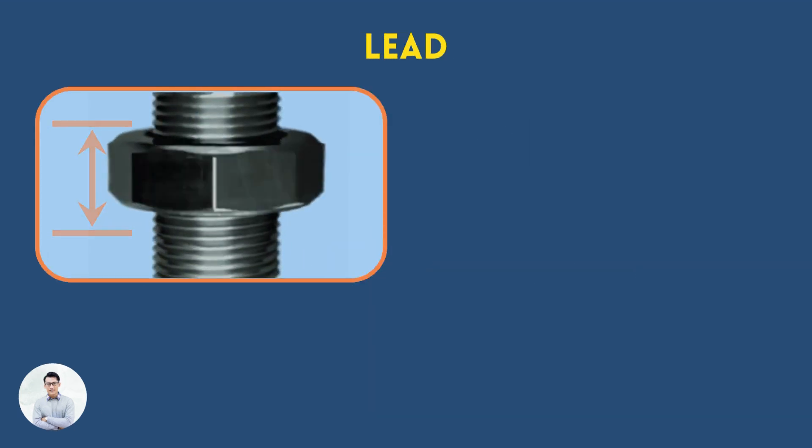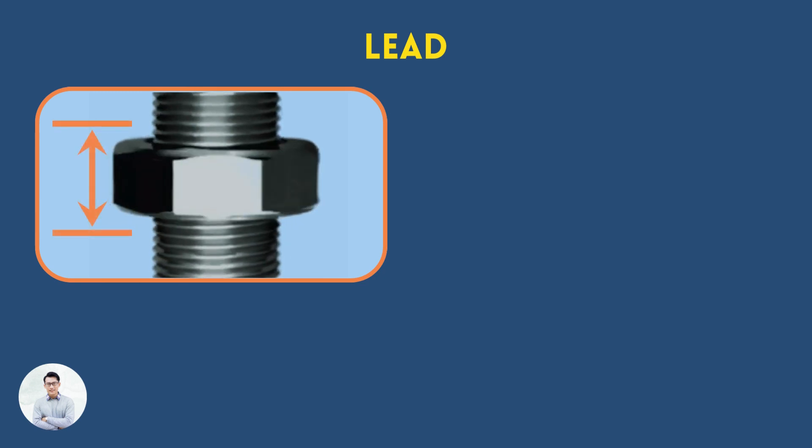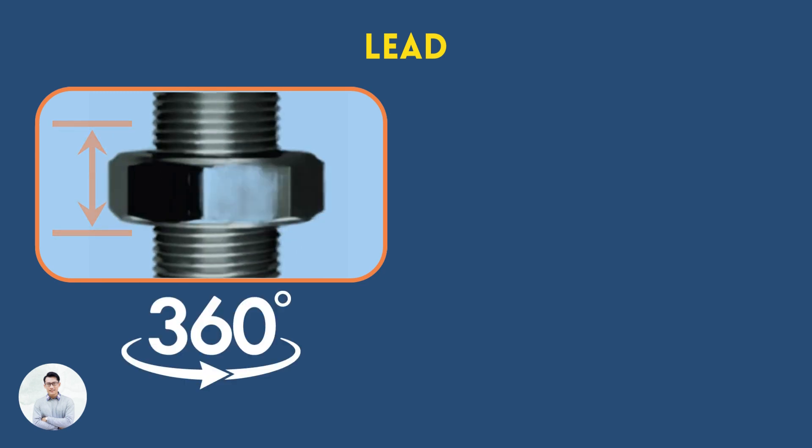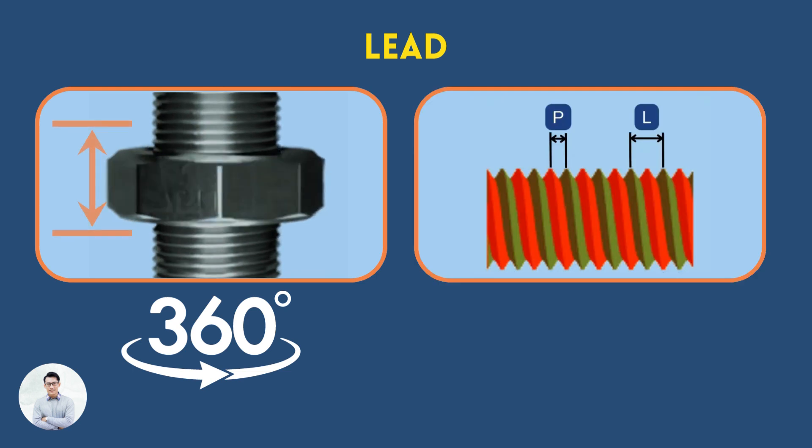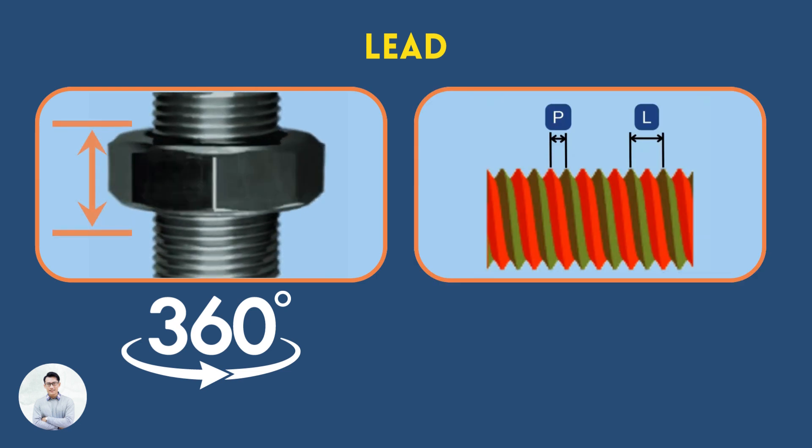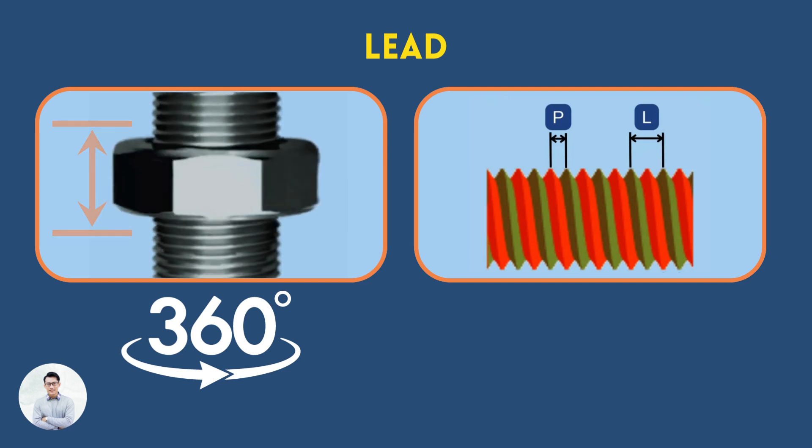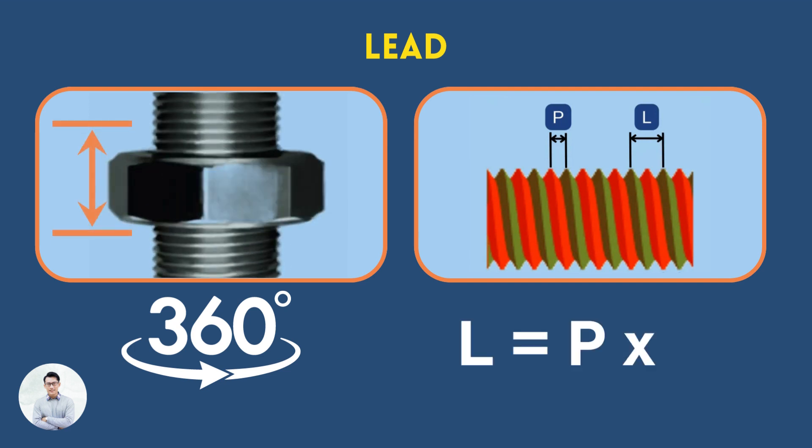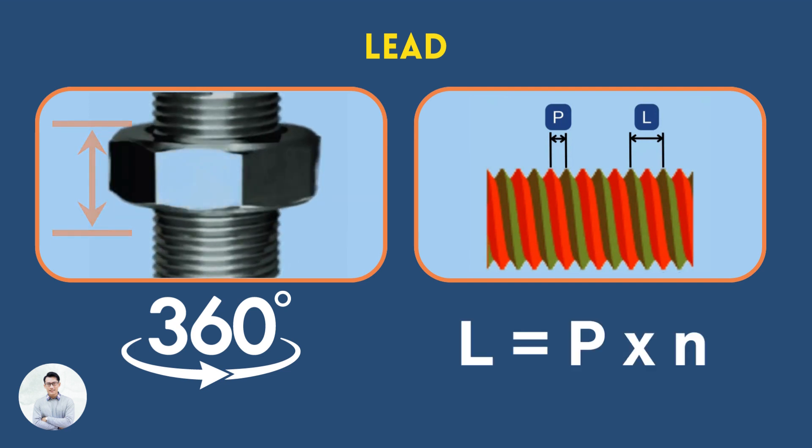The lead is the linear distance the thread travels due to a full 360-degree rotation. The lead equals the pitch in the typical standard case of a single start thread. In multi-start threads, the lead equals the pitch times the number of starts.